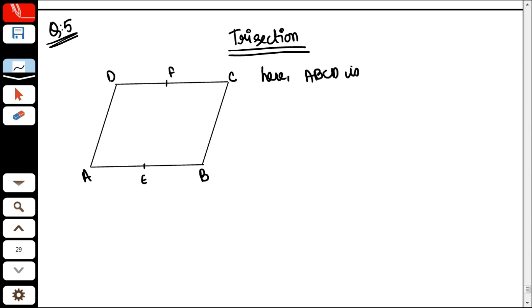Here, ABCD is a parallelogram. Therefore, AB is equal to CD and AD is equal to BC. If AB equals CD, then half of AB equals half of CD, right? It will be. That's fine.